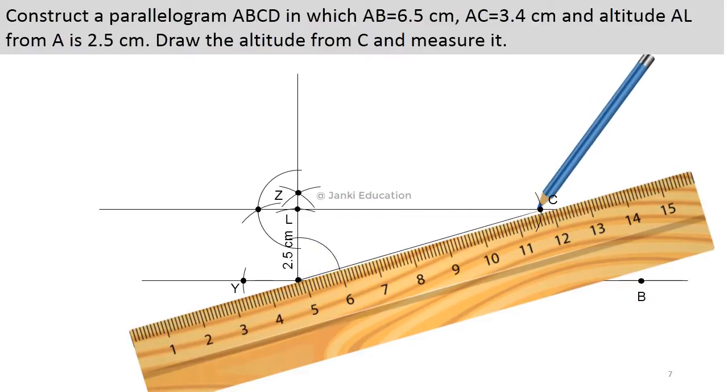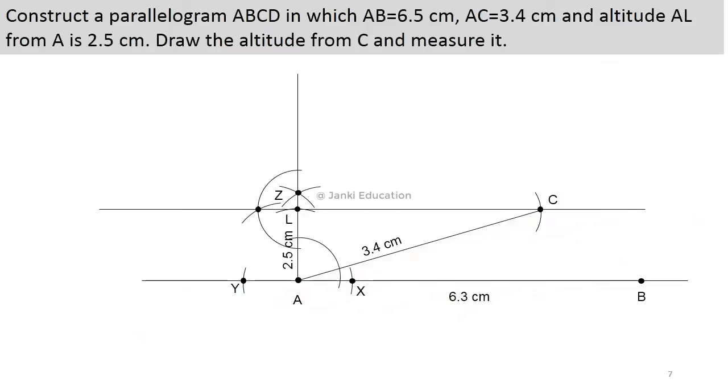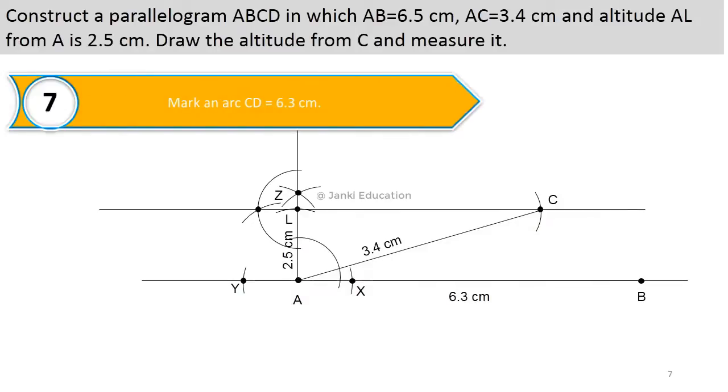This is our diagonal 3.4 cm. Next is we will mark an arc CD equal to 6.3 cm, because AB and CD are opposite sides of a parallelogram, and parallelogram is always having its opposite side with equal measurement.